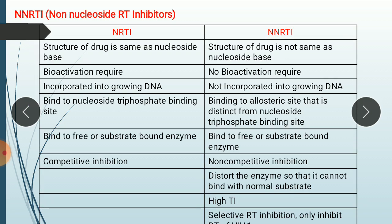In the previous video, we discussed the reverse transcriptase enzyme. So here, once again, I repeat the function of reverse transcriptase enzyme. These are the enzymes which convert RNA into DNA. This conversion involves two steps: first, conversion of RNA into complementary RNA-DNA complex; and in the second step, conversion of this complex into double-stranded DNA. This enzyme consists of two catalytic sites: the polymerase catalytic site and the RNase H catalytic site.